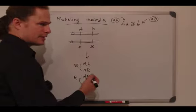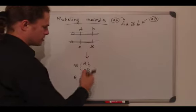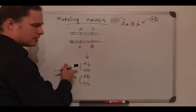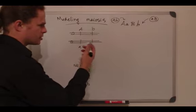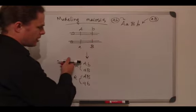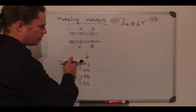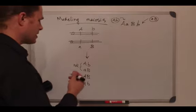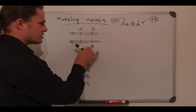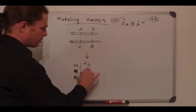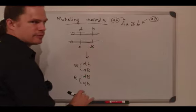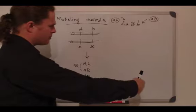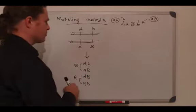For loci that are linked on the same chromosome, we will see something different than what we saw before. Previously with loci on separate chromosomes and assorting independently, all the different possible haploid products of meiosis had the same frequency. In the case of physical linkage on the same chromosome, the recombinant frequency will be less than 50 percent — it can range up to a maximum of 50 percent.